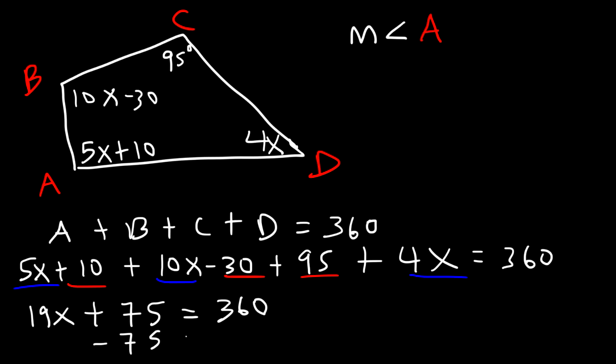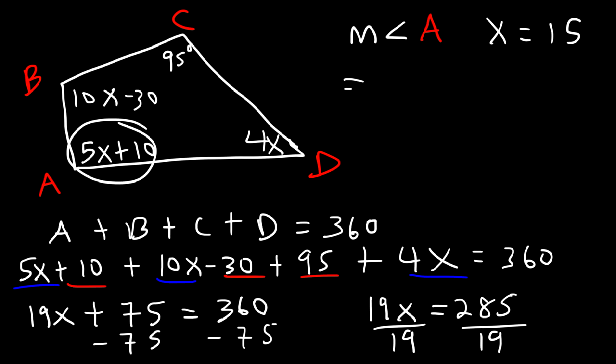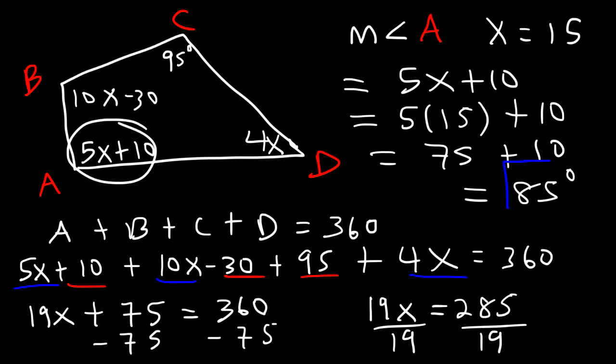Now let's subtract both sides by 75. 360 minus 75 is 285. And 285 divided by 19 will give us an x value of 15. So now that we have the value of x, we can find any angle that we want to find. So let's go ahead and find angle A. So angle A is 5x plus 10. And let's replace x with 15. So it's 5 times 15 plus 10. 5 times 15 is 75. 75 plus 10 is 85. So that's the final answer. It's 85 degrees. That's the measure of angle A.